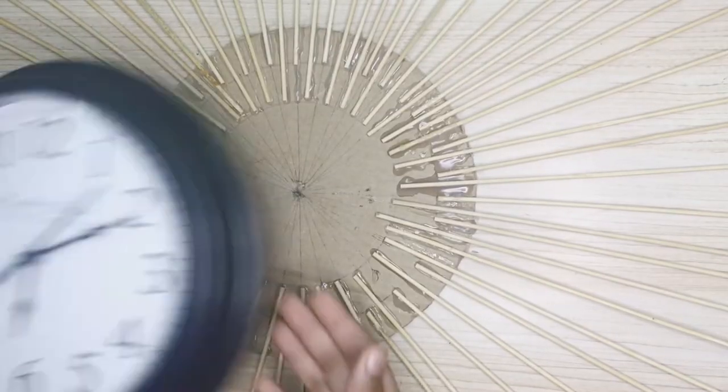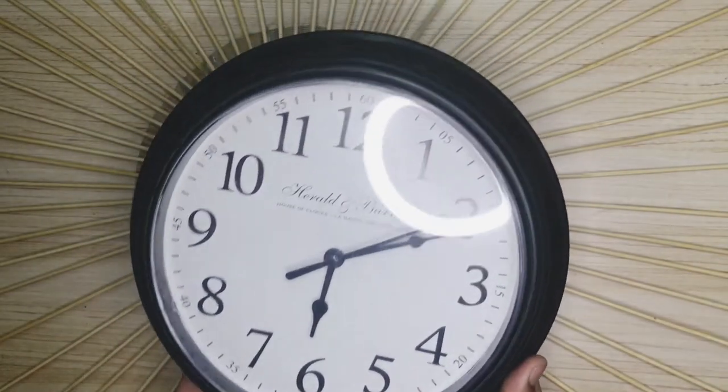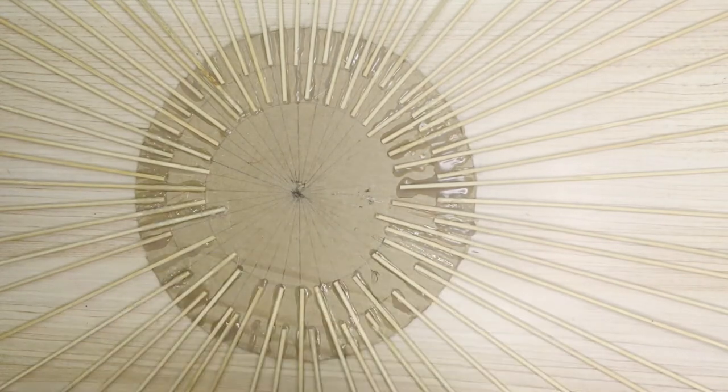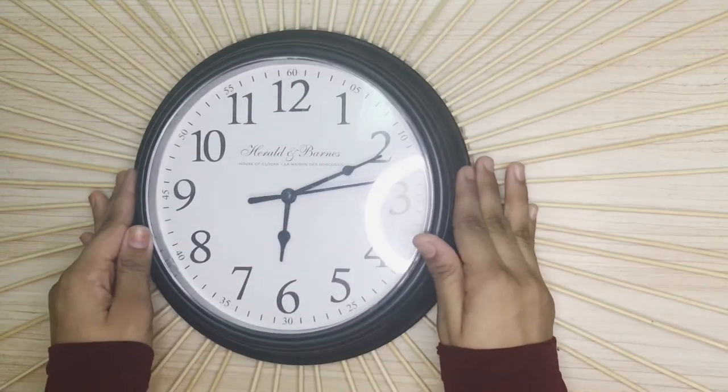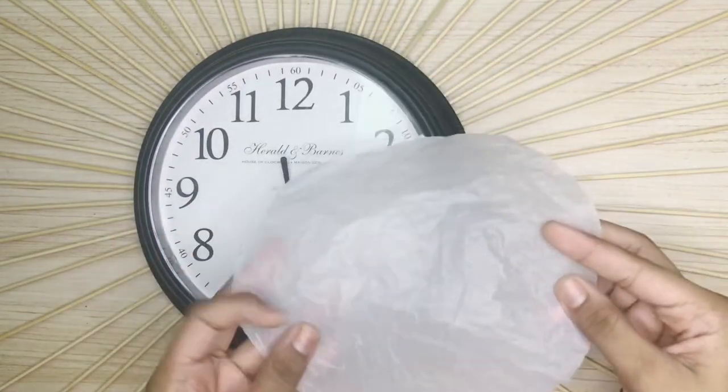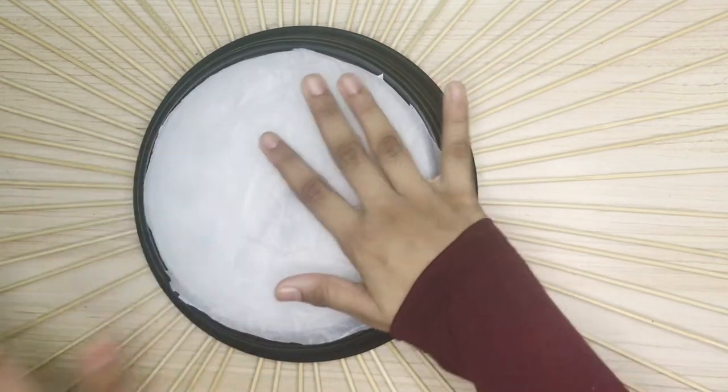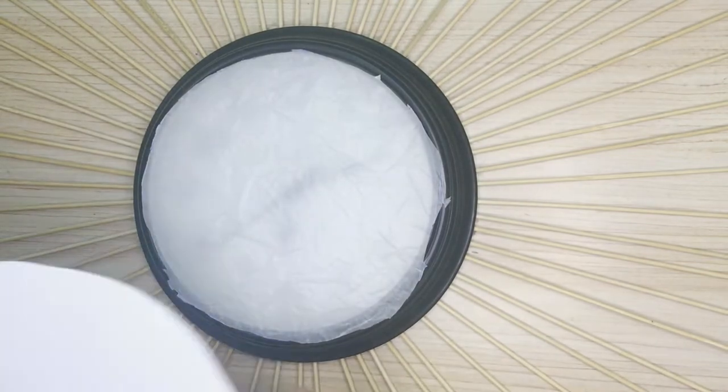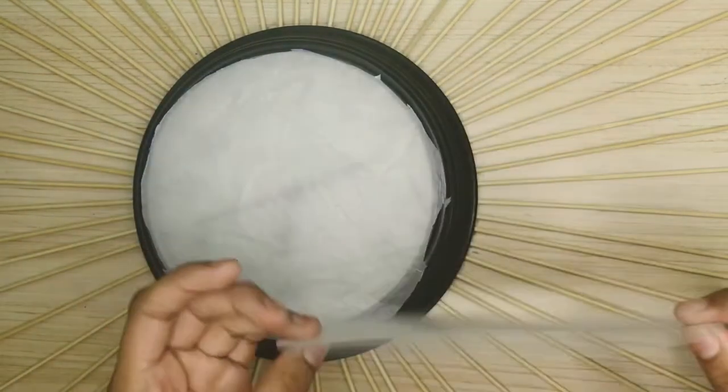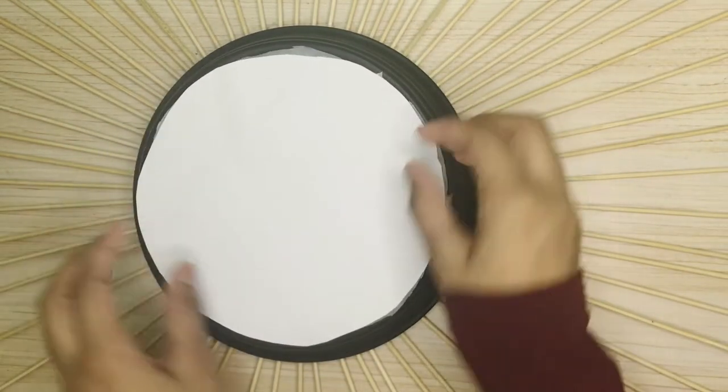Now I have finished sticking. Now I'm taking our clock. I have also cut out a circle on a plastic bag and I'm sticking it on the glass of the clock like this. I have also cut out a circle on paper.